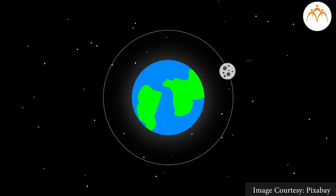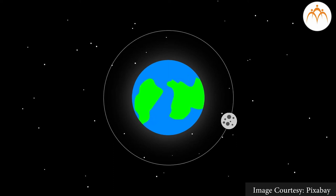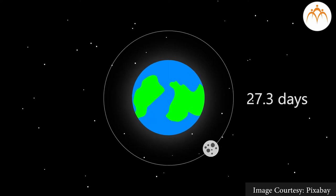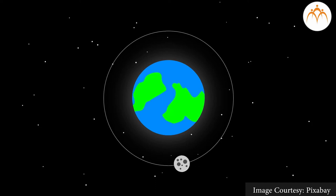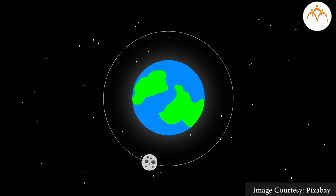Similarly, the moon completes one revolution around the earth in 27.3 days. Each day the moon travels some distance which is called a nakshatra. If we divide 360° into 27 equal parts, each part has an angle of 13 degrees and 20 minutes. Every nakshatra has one prominent bright star known as the yogatara.